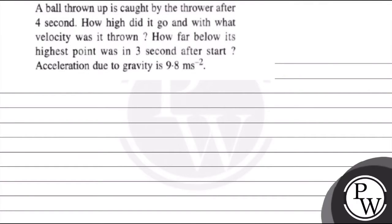Let's read the question. A ball thrown upward is caught by the thrower after 4 seconds. How high did it go? With what velocity was it thrown? How far below its highest point was it at 3 seconds after start? Acceleration due to gravity is 9.8 m/s².